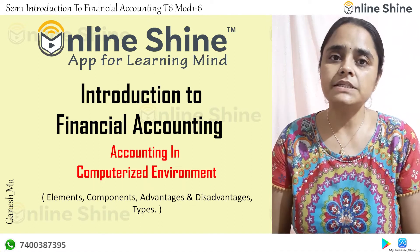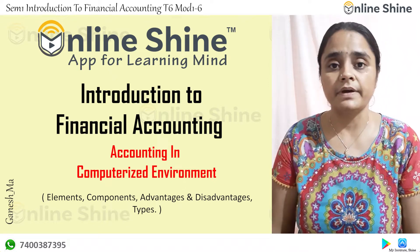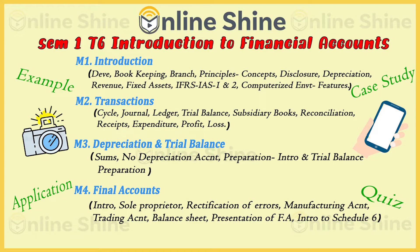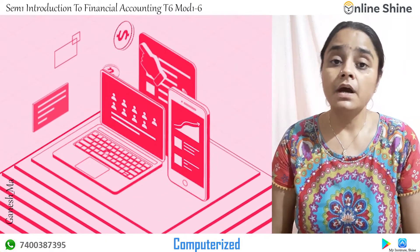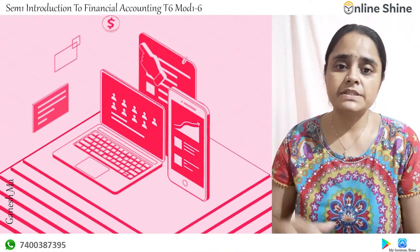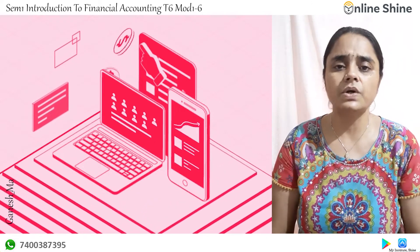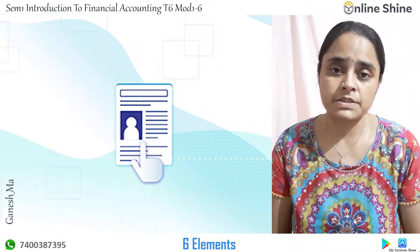Now we will go for the last topic, which is accounting in a computerized environment. Nowadays everybody has become quite computerized. Earlier we used to maintain our accounts and keep our books of accounts in documents, or we used to write our accounts manually. Now everything is online. There are basically six elements of a computerized system.